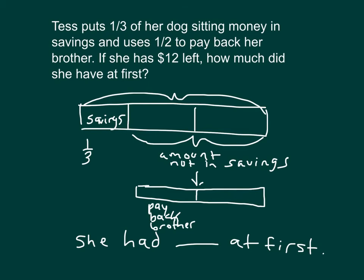Finally, it says she has $12 left, and this was the amount that she had left. If she had $12 left, and this was half of the amount not in savings, this $12 better equal the amount that she paid back towards her brother. So we have $12 and $12 more. That is $24 total that she did not put into savings. We can write that $12 in there. One unit is 12, another unit is 12, and this third part of the whole is also $12. $12 plus $12 plus $12 is $36, and that is the amount that she had at first.